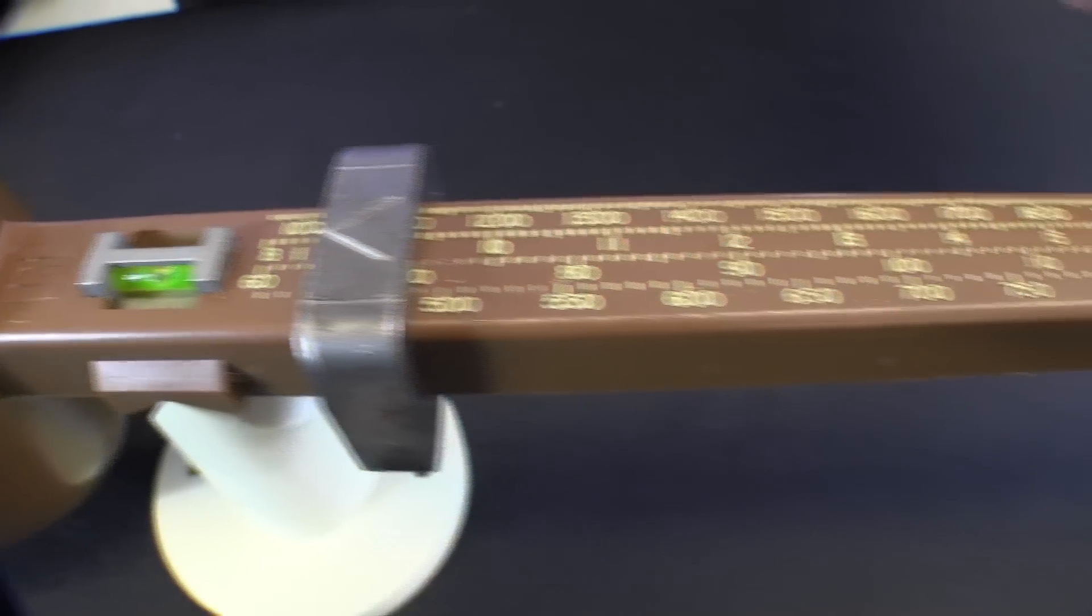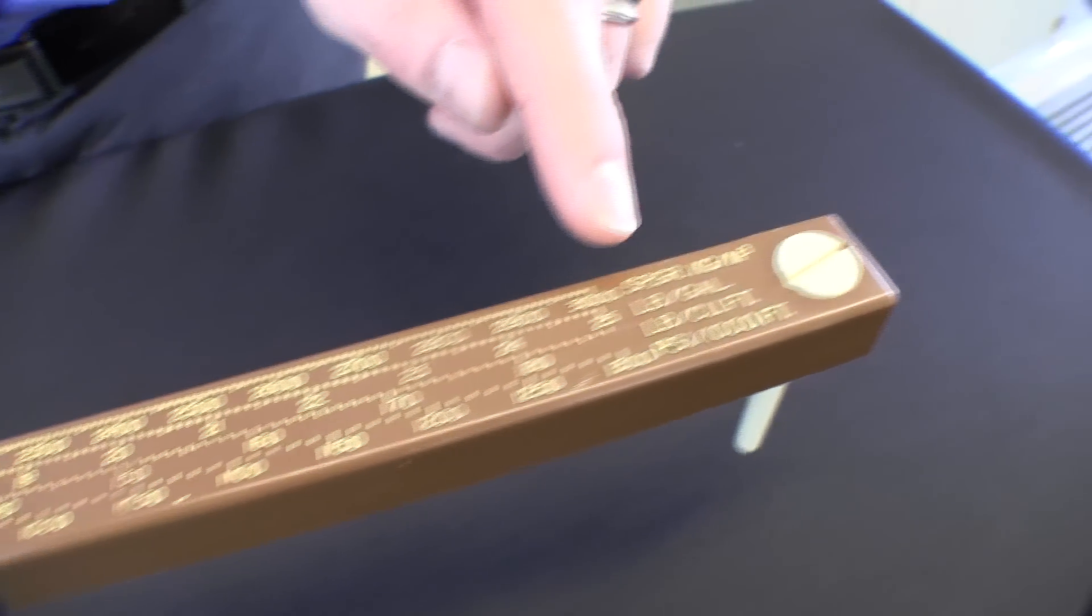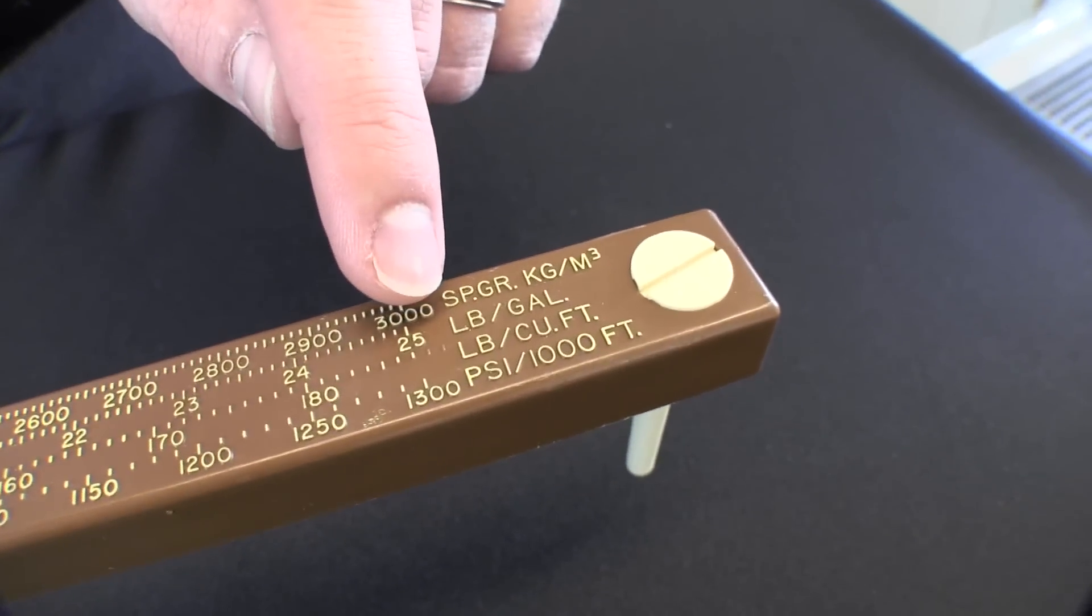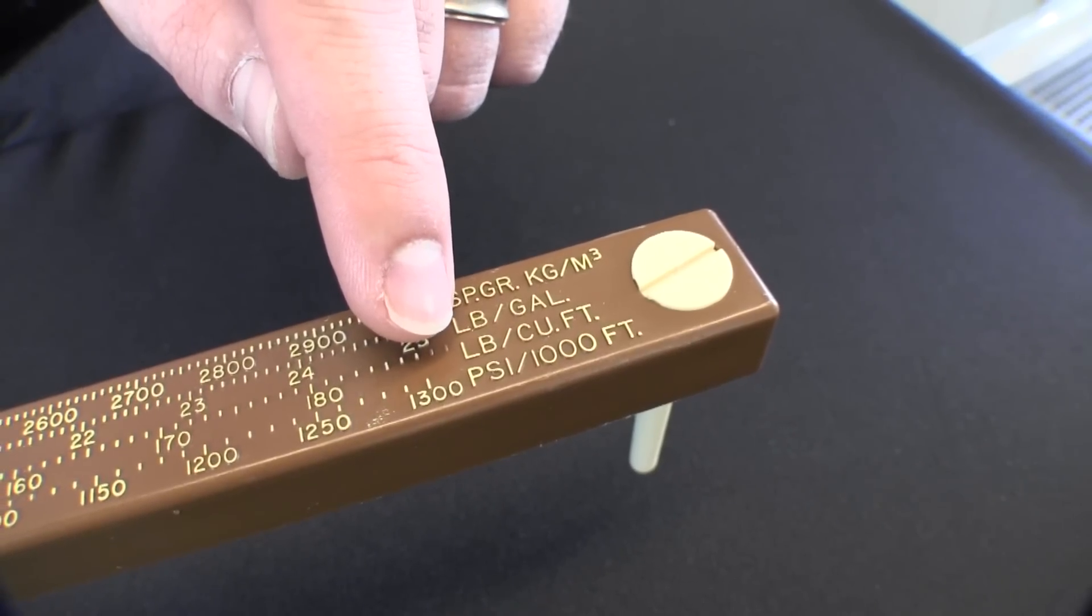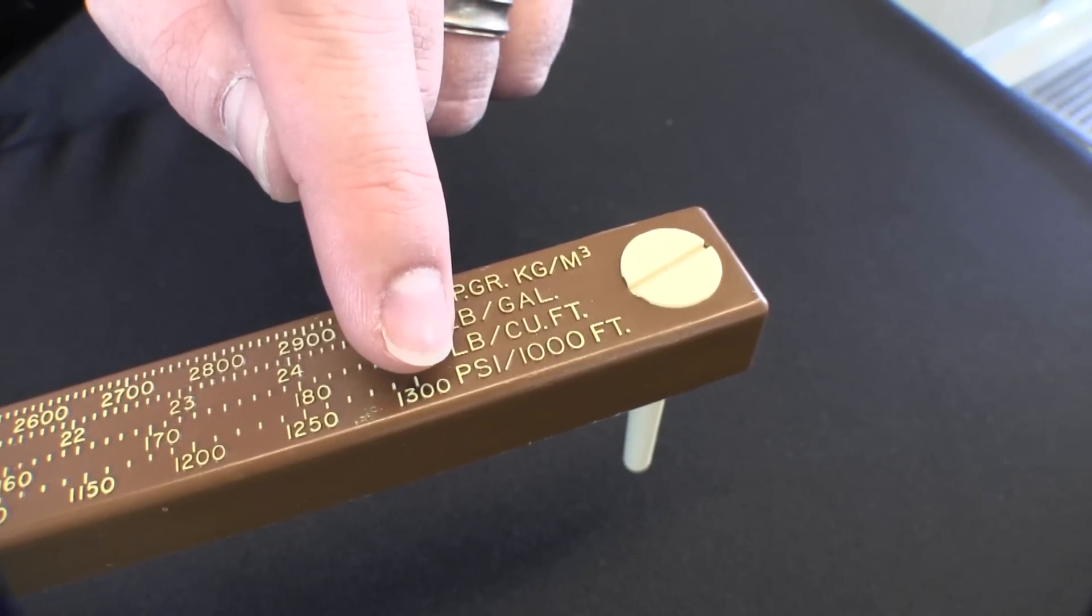The mud balance scale has four units of measurement: specific gravity, pounds per gallon, pounds per cubic foot, or PSI per thousand feet.